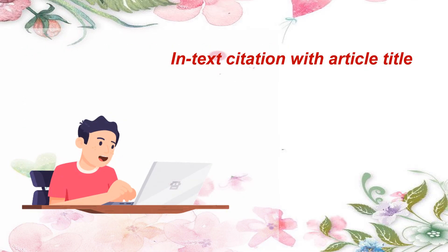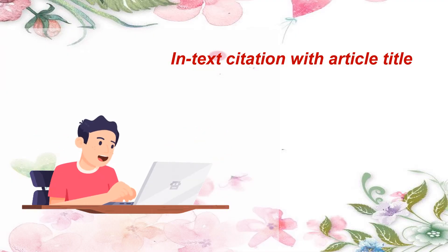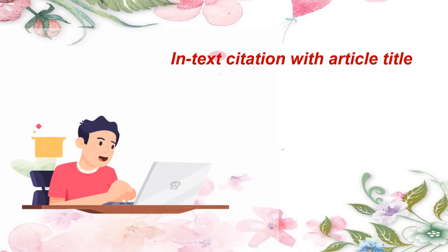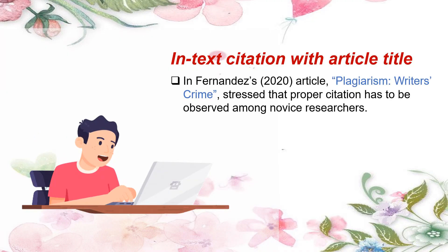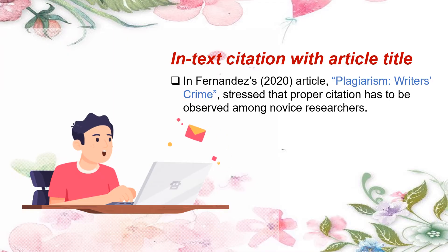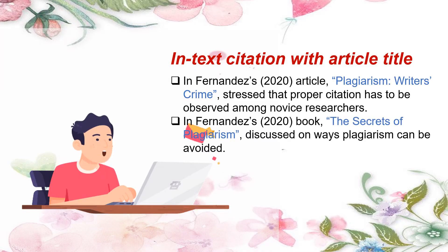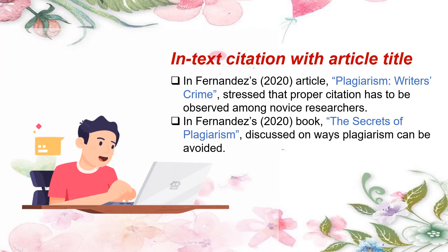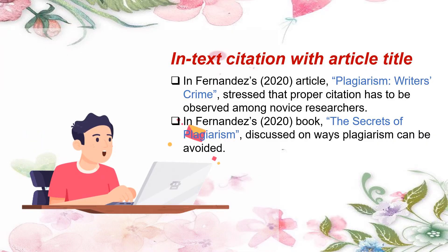How about if the writer wanted to indicate the title of the source? Of course, you can do it. However, the title has to be in quotation marks. In-text citation with article title: In Fernandez's 2020 article, "Plagiarism: Writer's Crime," stressed that proper citation has to be observed among novice researchers. Another example: In Fernandez's 2020 book, "The Secrets of Plagiarism," discusses ways plagiarism can be avoided. Again, the title of the source must be in quotation marks.